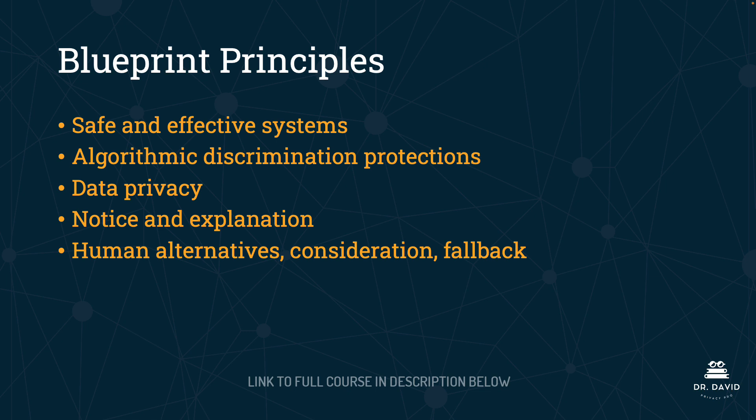What sticks out in a particular set of principles? For example, with the White House blueprint for an AI Bill of Rights, algorithmic discrimination protections and human alternatives, consideration, and fallback are pretty unique to this blueprint. You will see existing laws that protect individuals from discrimination and that human oversight is important, but explicitly calling these out as top-line bullet points is something you should definitely remember.